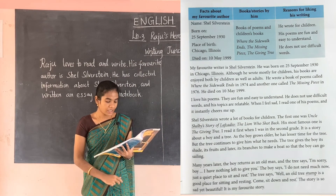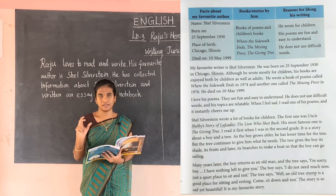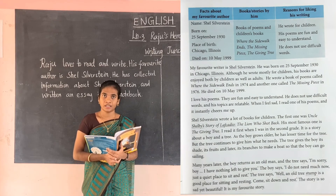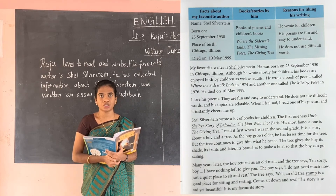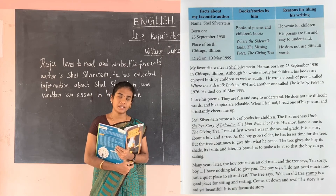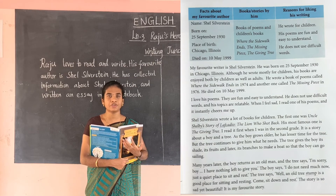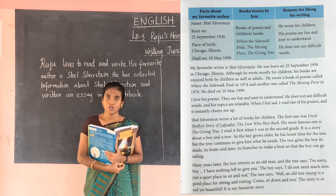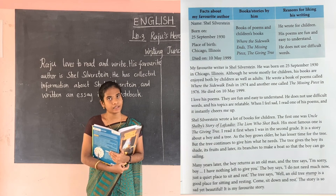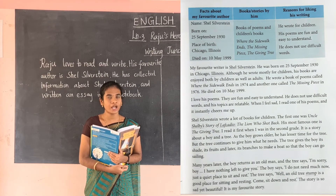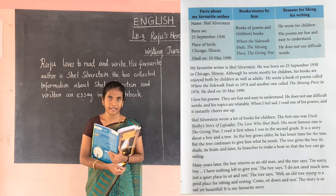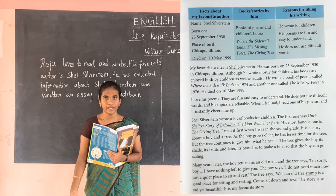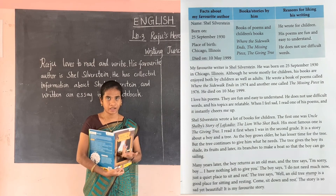So in The Giving Tree, the boy used to spend most of his time in the tree, but while growing up he spent less time there. The tree continued to give him shade, shelter, food, and its branches to make a boat. As both the boy and tree grew older, the tree said, 'Sorry boy, I am having nothing left for you,' because the tree had continuously given to the boy and now had nothing more to offer.